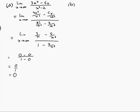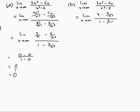For part (b), the limit as x approaches infinity of (3x³ - 4x) / (x³ - 2): in this one the power on the top is the same as the power on the bottom, so let's try the same trick and divide everything by x cubed. That gives us (3 - 4/x²) / (1 - 2/x³). As x gets larger and larger, 4/x² and 2/x³ both approach zero, so we get 3/1, which is 3.